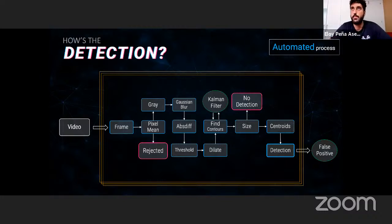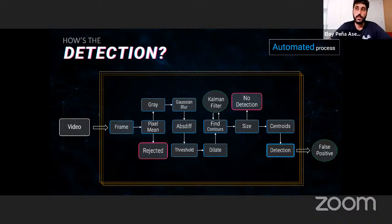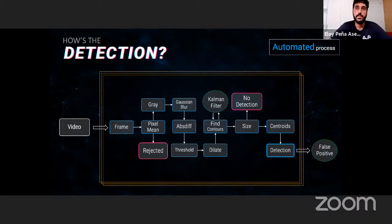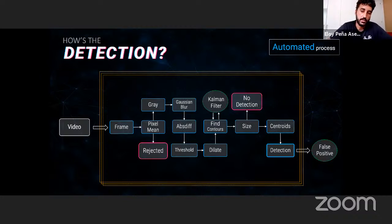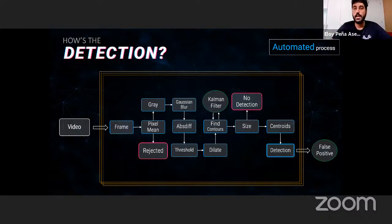We then discriminate by size to avoid very large or very small areas, and compute the centroid of the final contour to get the real position of the meteor. To avoid false positives, we implement two methods: an online Kalman filter that models the first detected points and predicts the next area of appearance, restricting the search to that area; and a post-processing clustering algorithm.